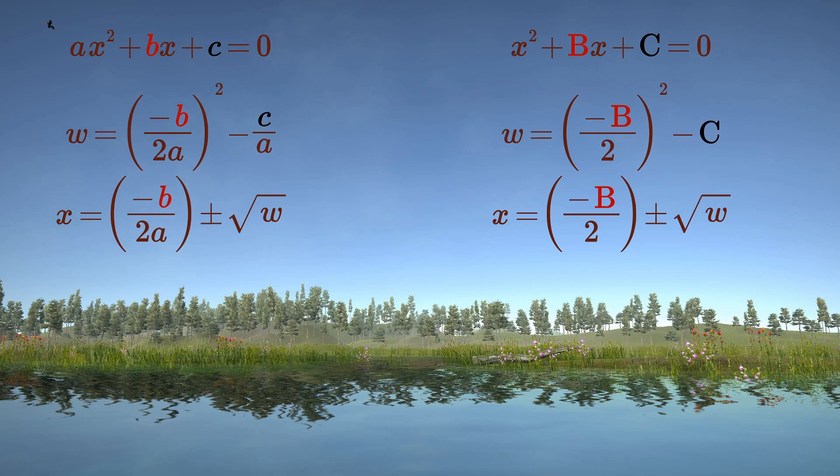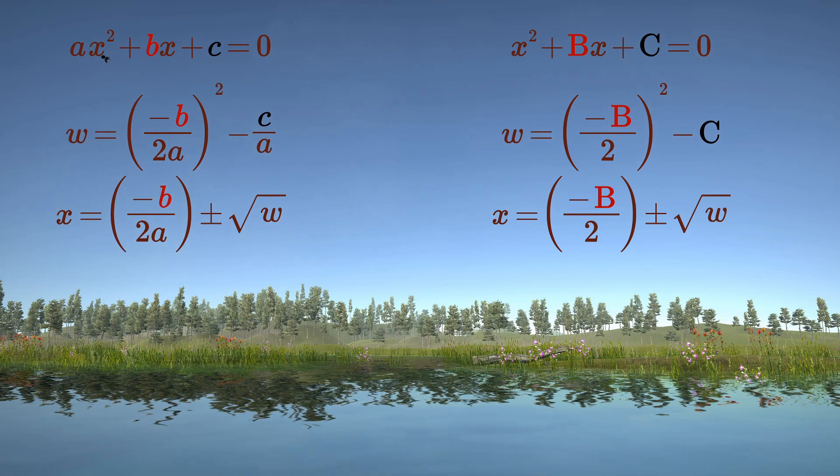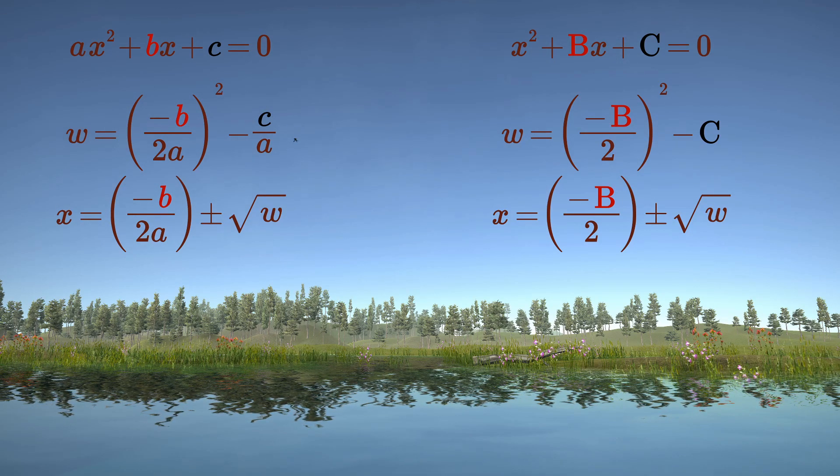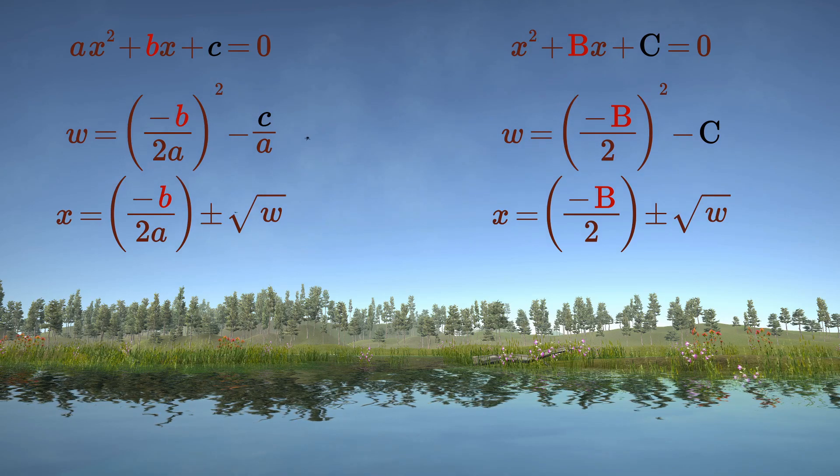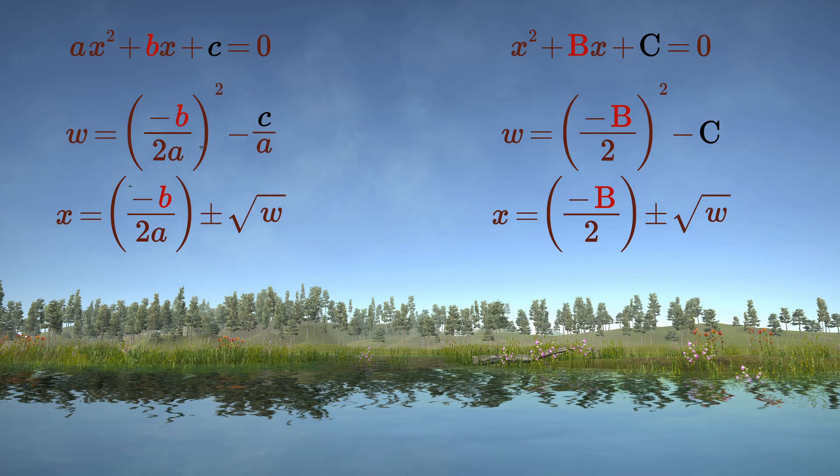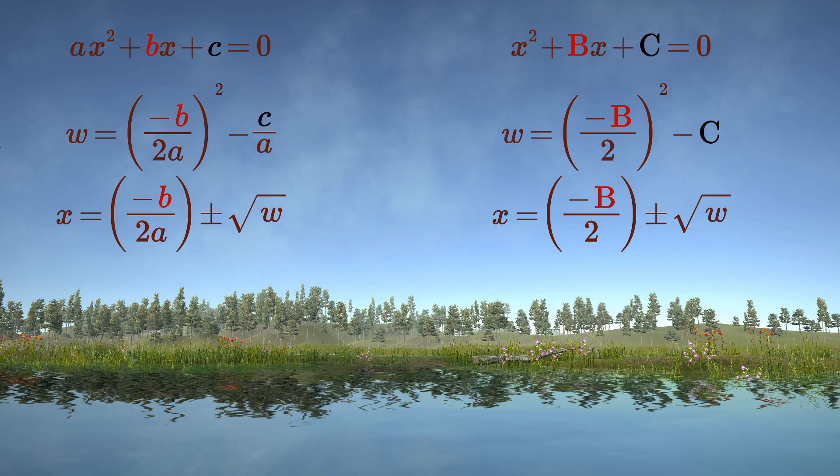This is a lot easier than remembering and applying the formula used during the last 1,400 years. The only steps that get more difficult as the complexity increases is squaring minus b over 2 and calculating the square root itself.